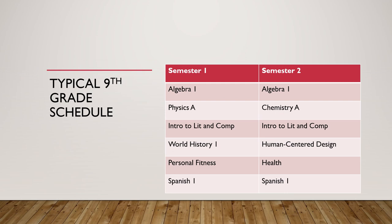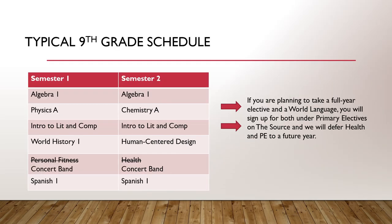Here is an example of a typical ninth grade schedule — obviously this will differ based on what classes you took in middle school or if you're coming from a private school. Feel free to pause the video and look at it. Something to keep in mind: if you're planning to take a full-year elective and a world language — for example, concert band, orchestra, or choir — you will sign up for both under your primary electives, and then you can defer health and PE to a future year. Those are still graduation requirements.